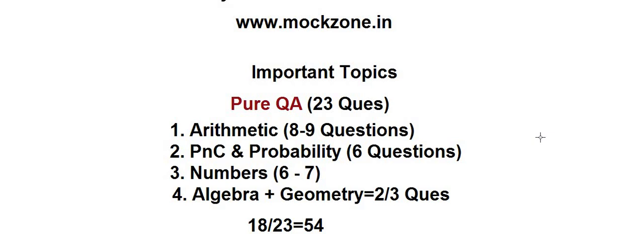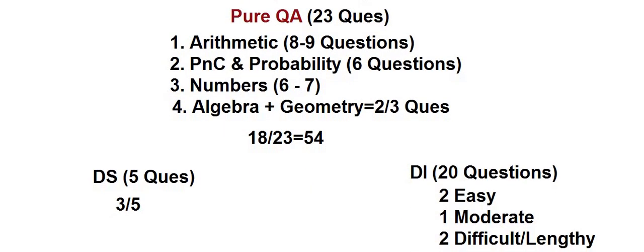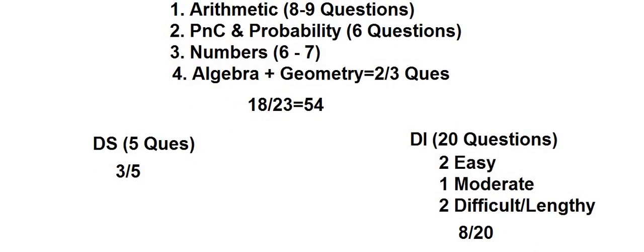So 23 pure quant questions: if you cover Arithmetic, PNC, Numbers, and Algebra basics, that accounts for around 18 out of 23. That leaves about 5 questions, giving you roughly 54 marks secured. Now coming to the next part — DS section has 5 questions.